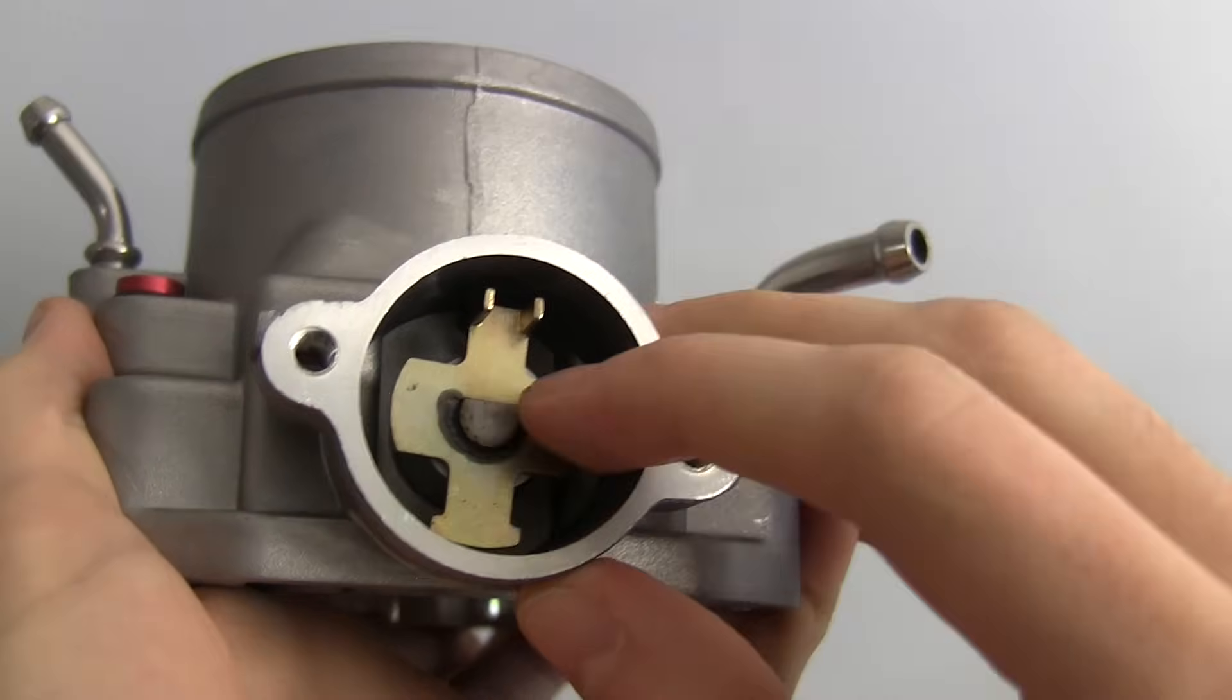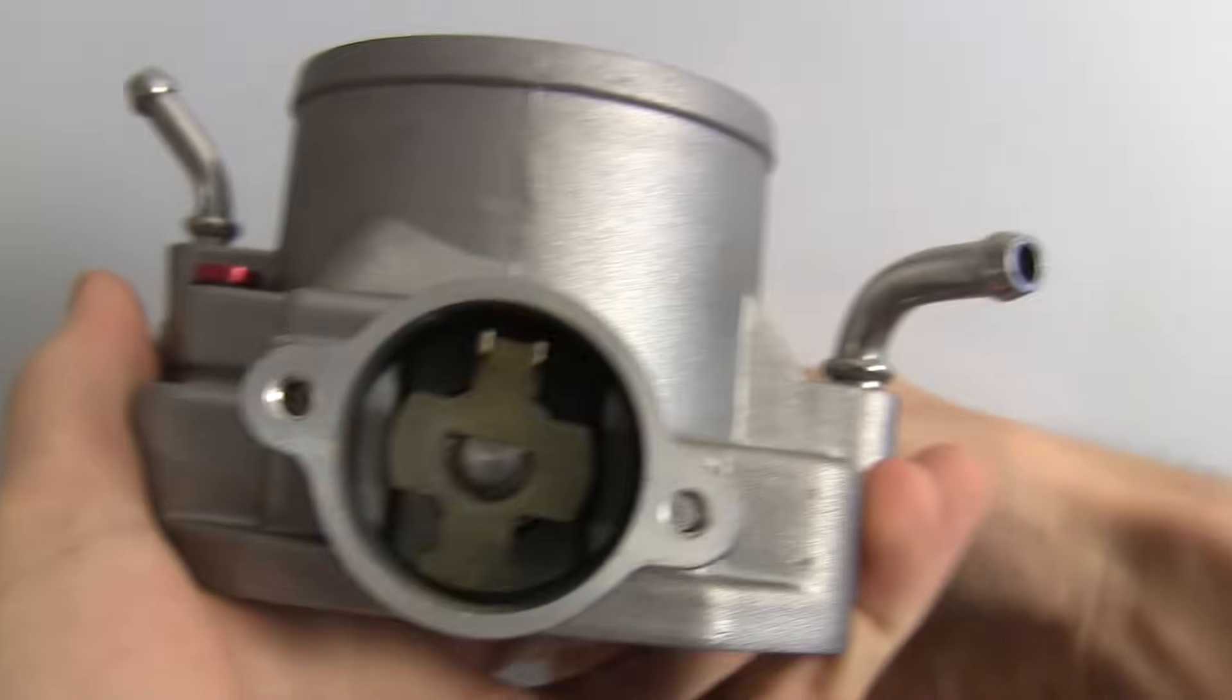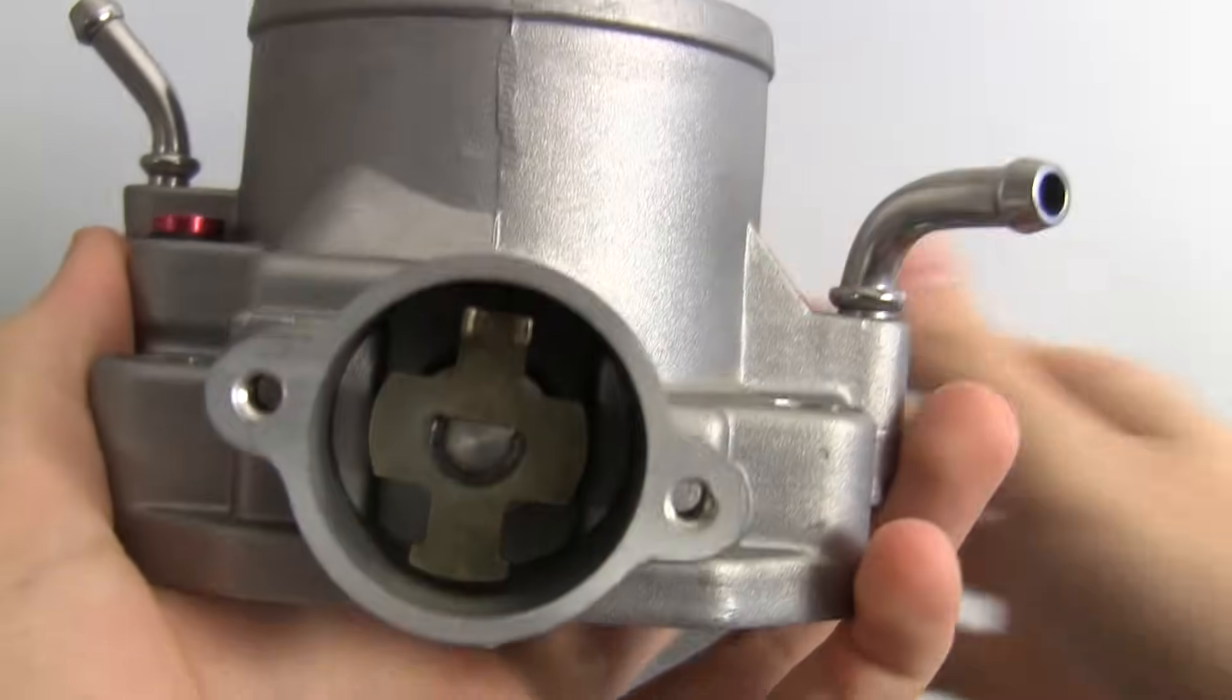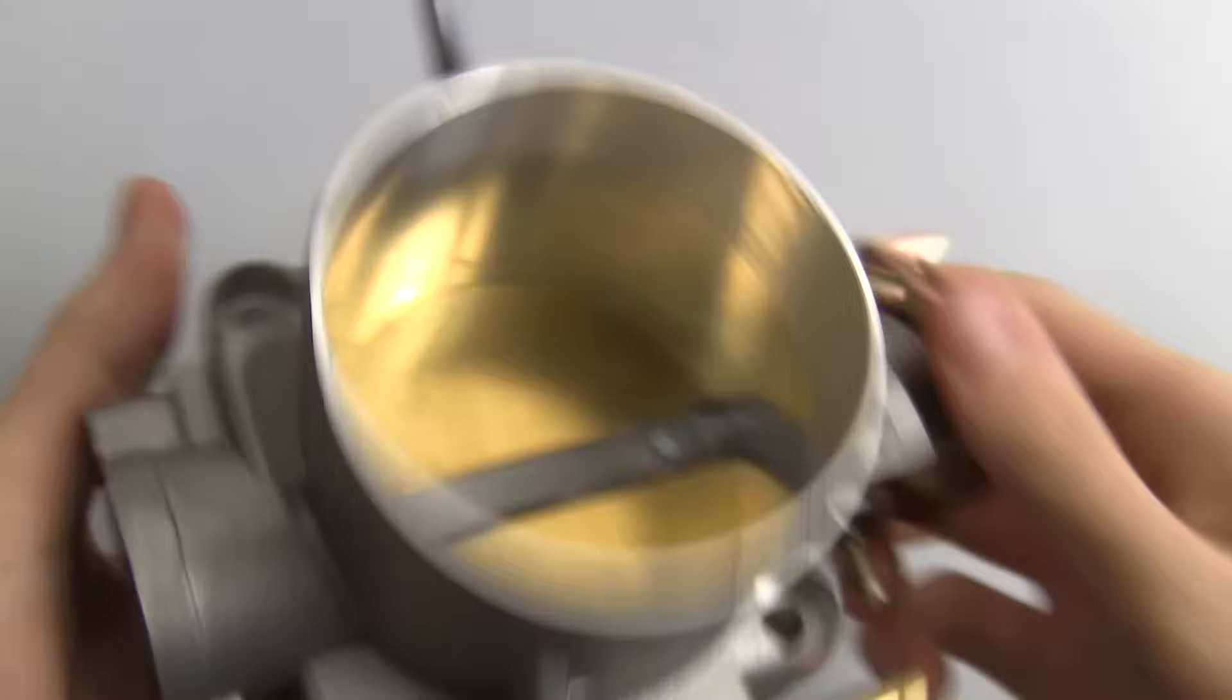On the side we have where the throttle position sensor mounts and so as this valve opens you can see it will rotate and it will change the throttle position sensor and it will know how open the throttle is.